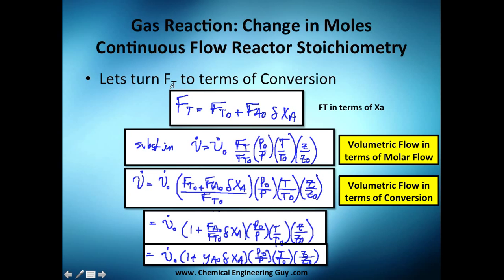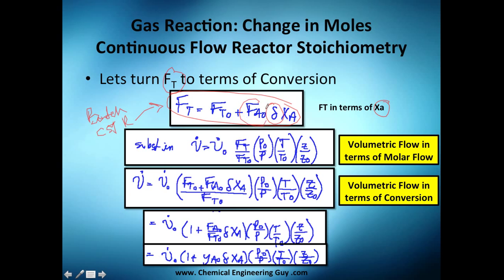Now let's express the total flow F_T in terms of conversion — we don't want F_T as a standalone variable. Recall from the batch and CSTR derivations: by definition, the total molar flow equals the initial total molar flow F_T0 plus the change in moles — which is delta times the initial molar flow of A times the conversion X_A. This gives us F_T in terms of conversion.